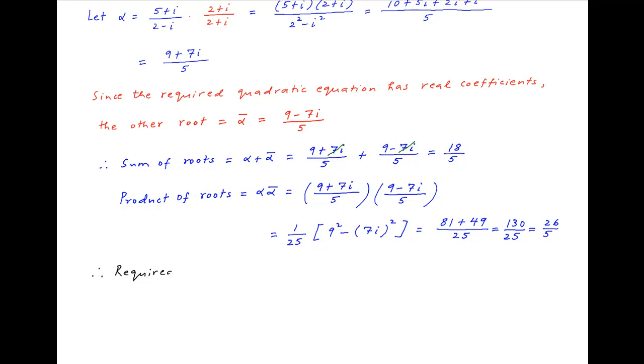Therefore, the required quadratic equation is x square minus 18 upon 5 times x plus 26 upon 5 is equal to 0. Multiply by 5, we get 5x square minus 18x plus 26 is equal to 0, which is the required answer.